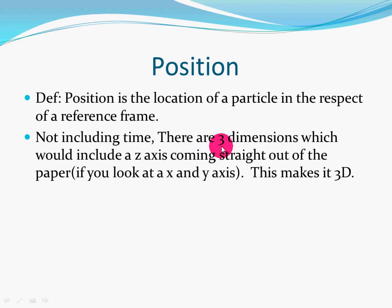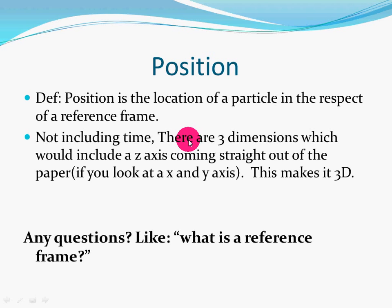Not including time, there are three dimensions which would include a z-axis coming straight out of the paper if you look at an x and y-axis. That is completely true. The not including time thing means time is actually considered a dimension. So sometimes people say we live in a four-dimensional world. That's because as we are in a place, that's also time. We can be at a place at a certain time, but that same situation cannot happen twice.